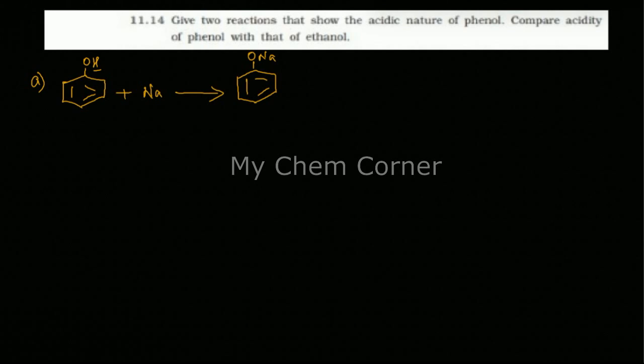We need one more equation because the question asks for two. So we can have phenol plus NaOH. In this case, the NaOH is going to act as a base because the OH⁻ is going to pull out the hydrogen from phenol, and it will be replaced with O-Na, forming sodium phenoxide. Both of these reactions show the acidic property of phenol, answering the first question.